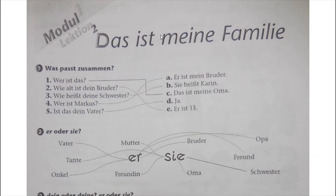Then: Wie alt ist dein Bruder? Er ist dreizehn. We use 'er' for masculine. And 'dein' for masculine.